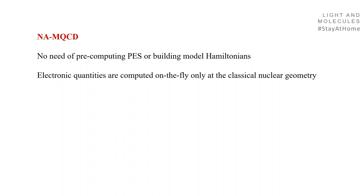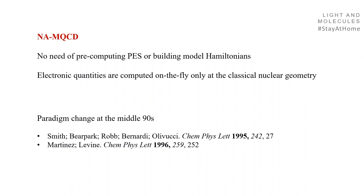Mixed quantum-classical dynamics does not need pre-computed potential energy surfaces or model Hamiltonians — you can use them, but they are not a requirement, because electronic quantities are computed on the fly only at the classical nuclear geometry. This was a paradigm shift in the mid-1990s when it became computationally feasible to do on-the-fly dynamics, probably introduced by Rob Olivucci in 1995 and followed by Martinez and Levine in 1996.